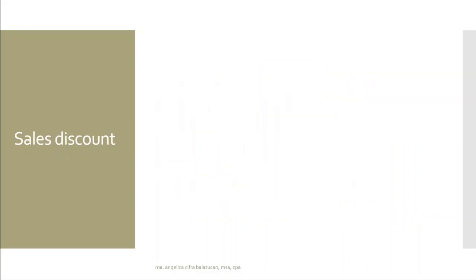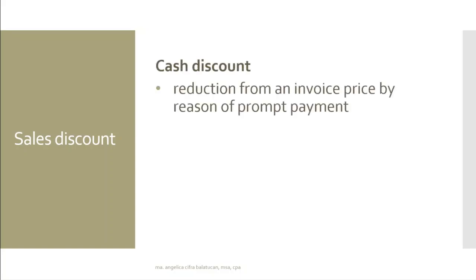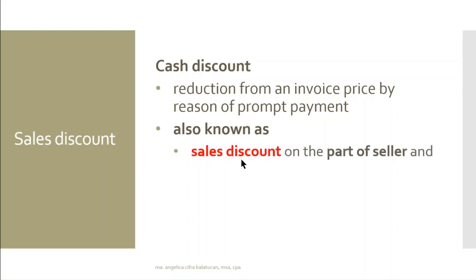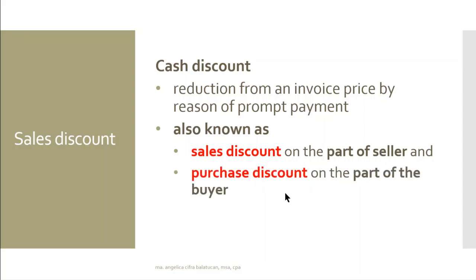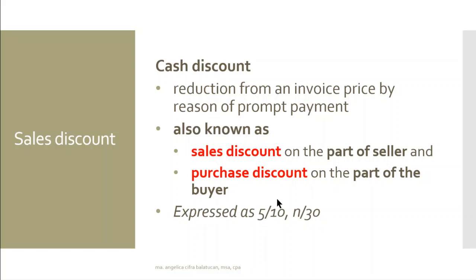We also have discounts — reductions from the invoice price resulting from prompt payment. As an incentive for paying early, an allowable discount is granted. It's known as sales discount if we are the seller granting the discount, and purchase discount if we are the buyer availing of it. It is expressed as 5/10, n/30 or 2/10, n/30 — meaning we have 10 days to pay to get the 5% discount, and the entire amount is due within 30 days if we do not pay within 10 days.